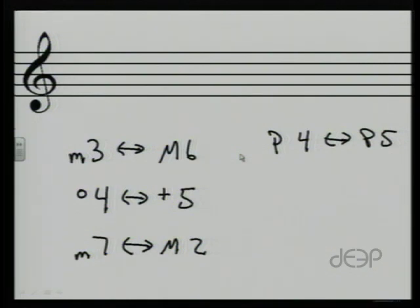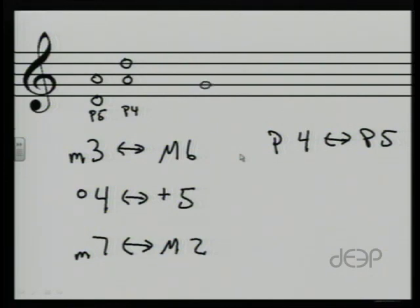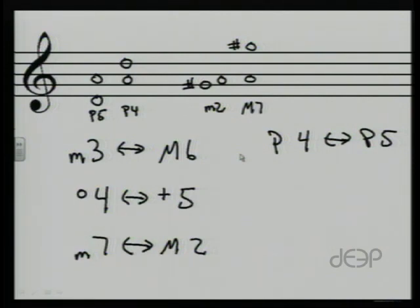We can also look at this on the staff. From D to A — inverting it by putting that lower note on top — this perfect fifth always inverts to a perfect fourth. From G sharp to A — a minor second — putting the G sharp on top will always be a major seventh, and we can continue in that way across the board. It's now time to go ahead and look at the assignment for this week. Hopefully this will all make sense as you work through the assignment on inversions.